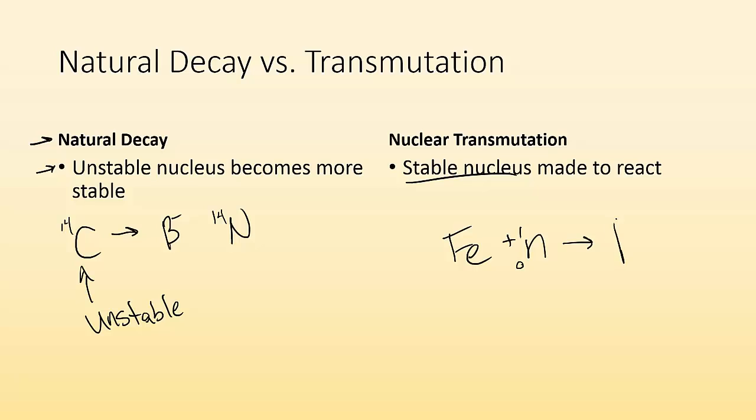and then it caused a decay to occur, right? So natural, we start with an unstable thing. Nuclear transmutation, we have to hit it with something to make it unstable.